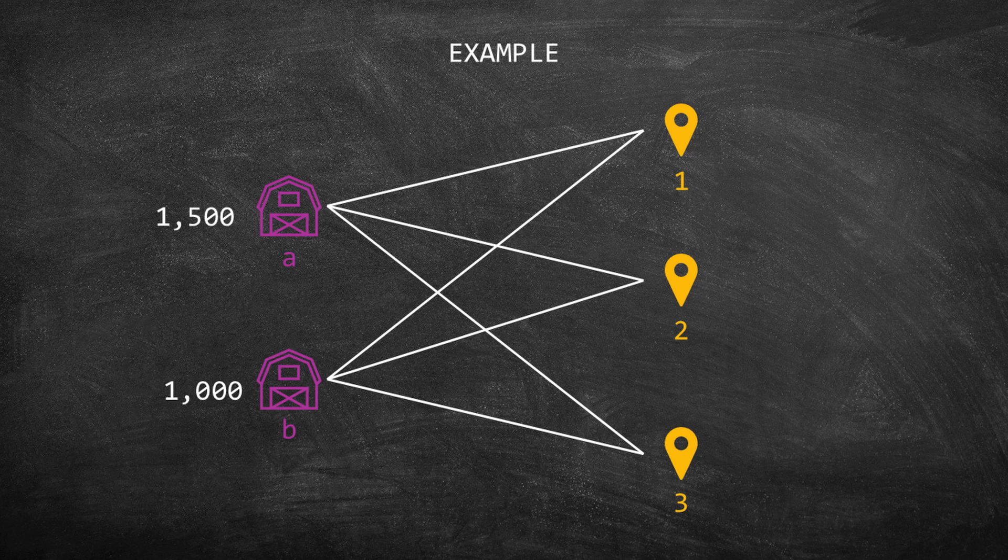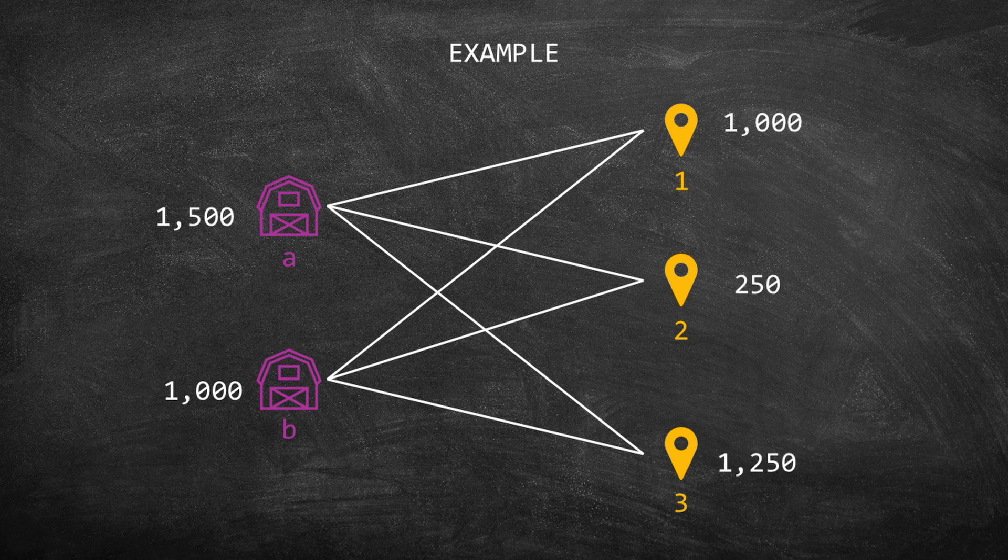Each supplier has a maximum capacity. For example, supplier A can ship at most 1,500 products and supplier B 1,000. Similarly, each customer has a demand. Thus, customer one needs at least 1,000 products, two needs 250, and three demands 1,250 products.